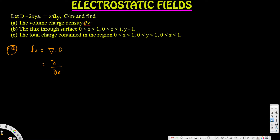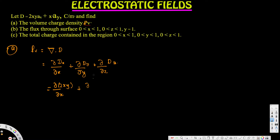Expanding ∇·D gives us: partial derivative with respect to x of the Dx component, plus partial derivative with respect to y of the Dy component, plus partial derivative with respect to z of the Dz component. The x component of D is 2xy, the y component is x², and there is no z component, so that term is just 0.